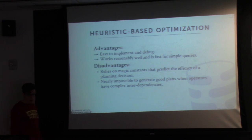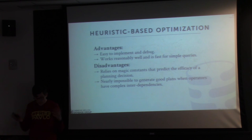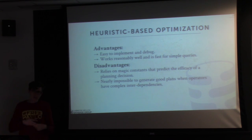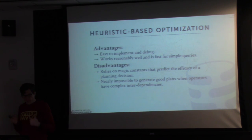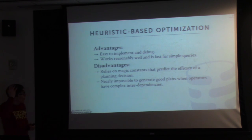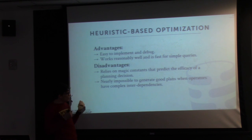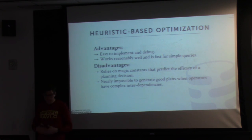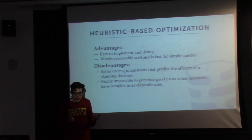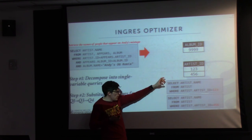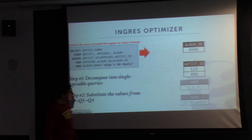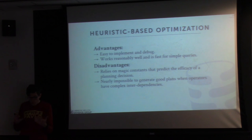The advantages of heuristic optimization are that it's easy to implement, easy to debug because you can trace through the code and see what steps it takes, and it works reasonably well and fast for simple queries. The downsides are that it's impossible to generate good plans for complex interdependencies or more complex operators like we have in SQL today. It also relies on magic constants to predict whether you're making a good decision — if you get the cardinality estimations wrong in these rules, you may end up choosing a bad plan.